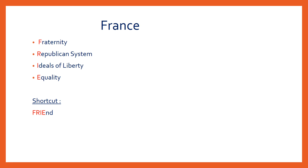Features from France include: fraternity, Republican system, and ideals of liberty and equality. These are the concepts inspired by the French constitution. The shortcut to remember is 'FRIEND' — F for fraternity, R for Republican system, I for ideals of liberty, and E for equality.